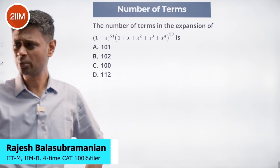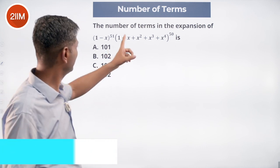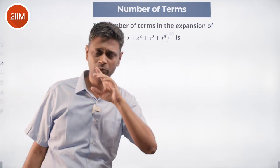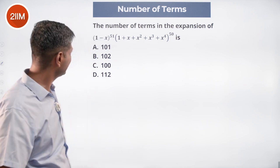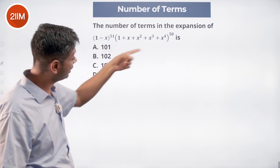More to this beautiful question. To start with, we need to understand this 1 plus x plus x square plus x cube plus x power 4. How do we get that? There is a 1 minus x whole power 51 here and power 50 here.